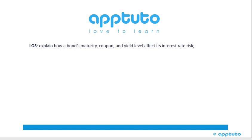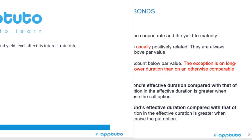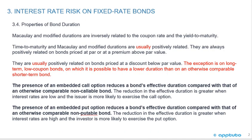This LOS explains how a bond's maturity, coupon, and yield level affect its interest rate risk. Now we're going to look at properties of bond duration.